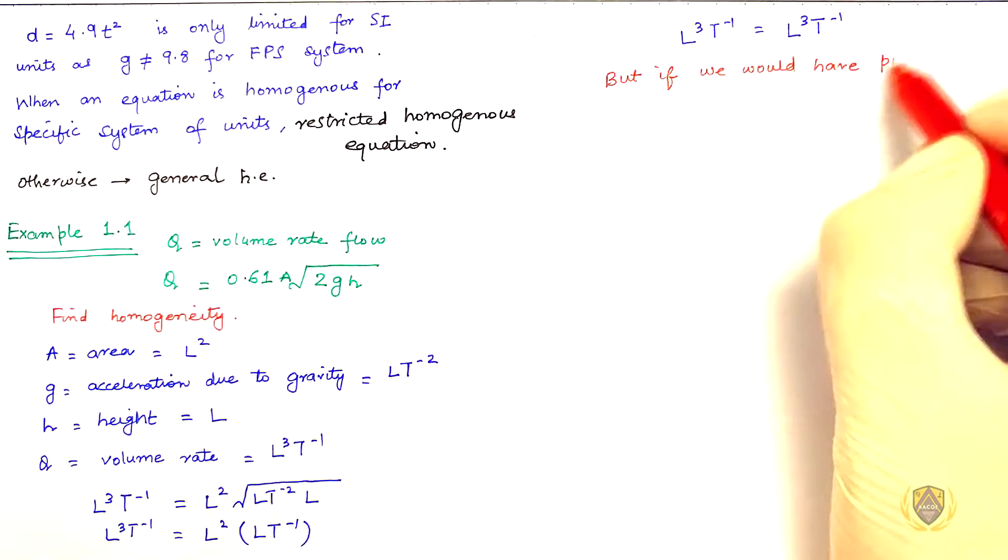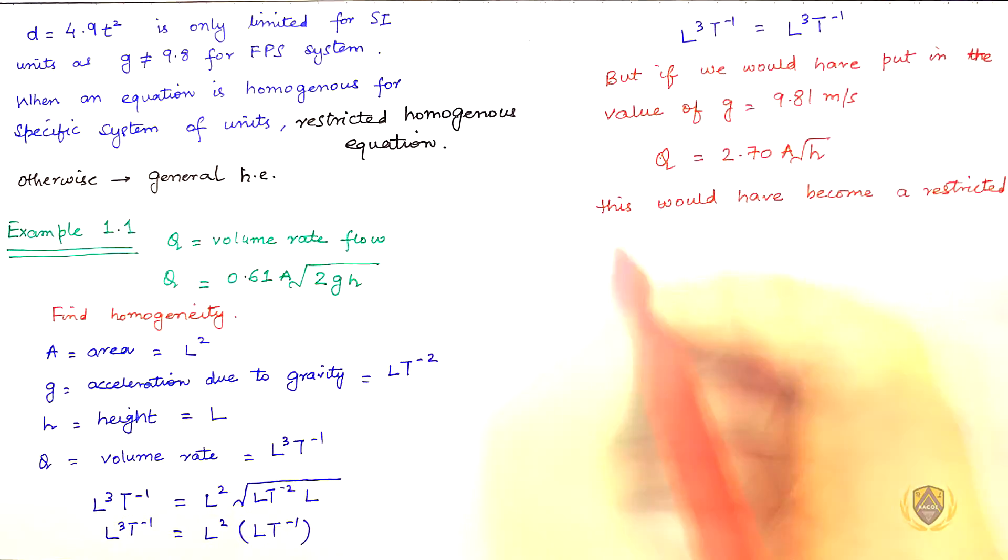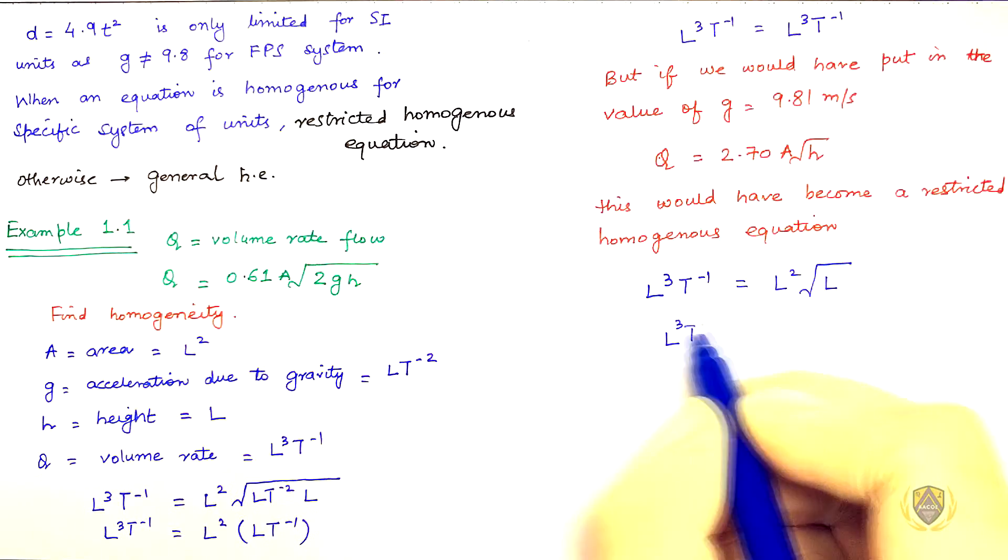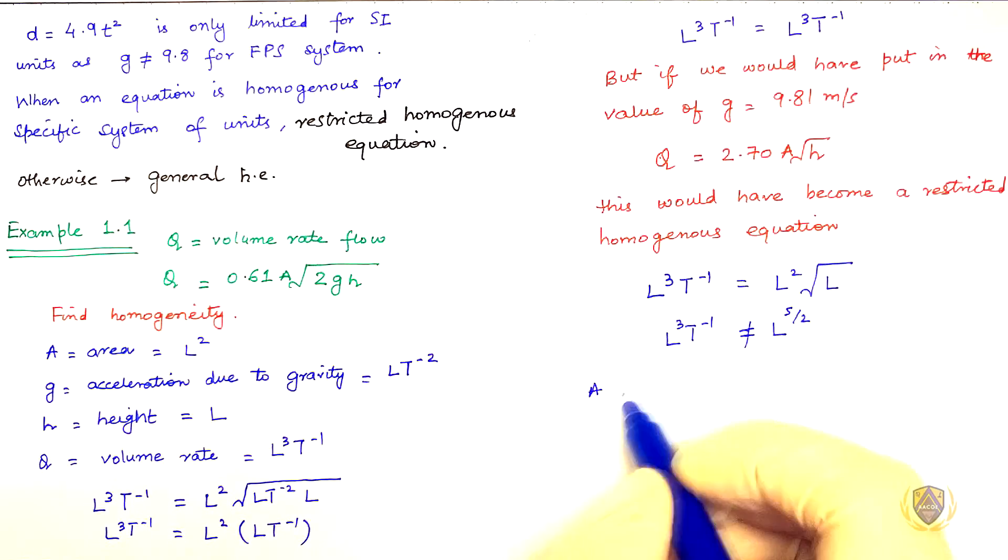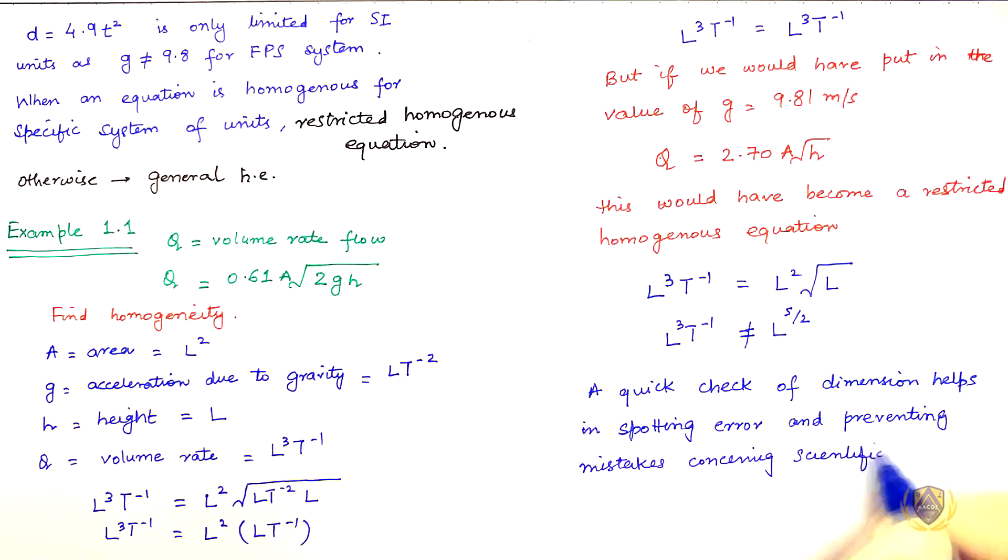But if we would have put in the value of G equal to 9.8 meter per second then this would have become a restricted homogenous equation. L cube T minus 1 is not equal to L 5 by 2. A quick check of dimension helps in spotting error and preventing mistakes concerning scientific constants.